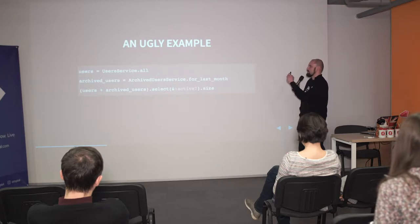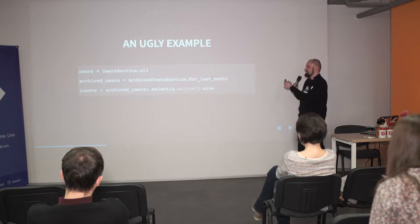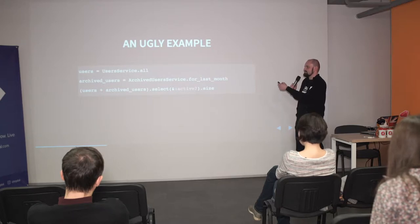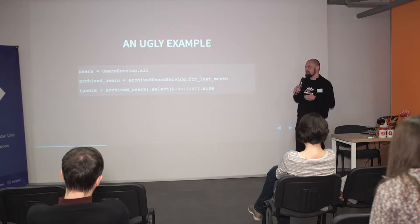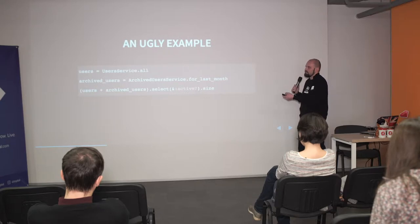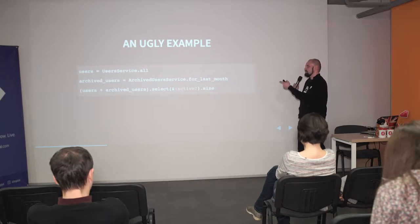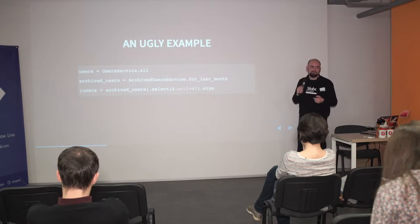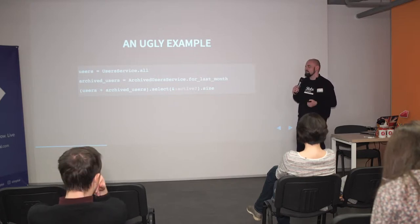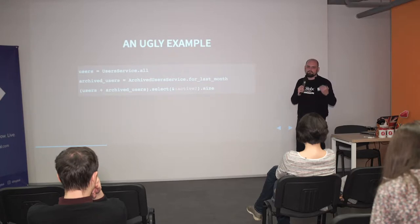I wanted to start from the ugly procedural example — if there are any functional programming fans, you will be highly irritated. We query some service for users, store them in a large array, then query for another type of users, combine those arrays into a third array, and use `select` from Enumerable to select all active users and get the size. This code has a serious flaw: the queries are blocking and synchronous. You will have to wait, and your execution flow will not continue until all users are fetched from their remote locations.